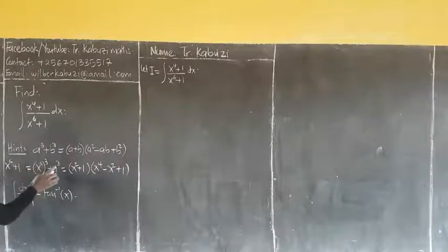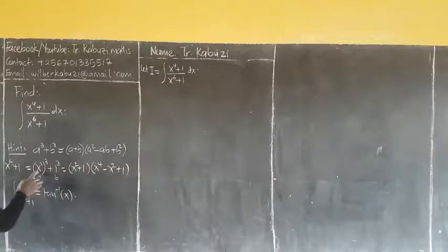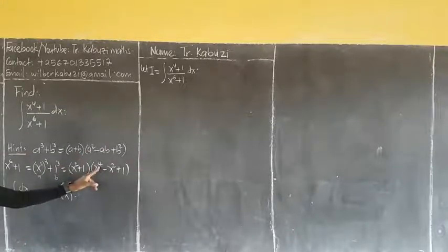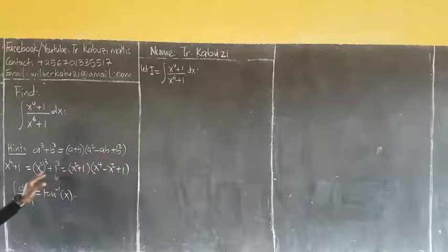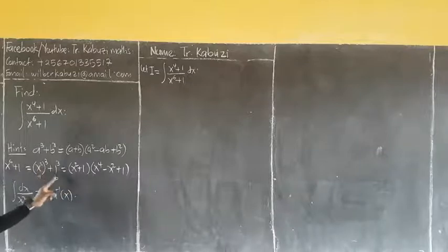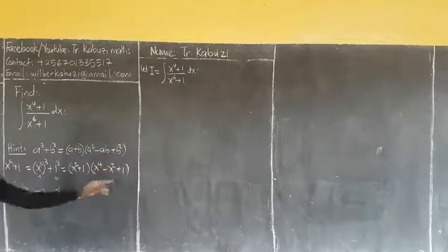So if I have a³ plus b³, my a is x², my b is 1. Then a squared gives x⁴, then a times b is x² times 1, then minus, then b squared: b is 1, when you square it you get 1.